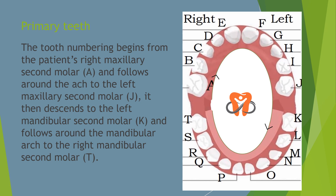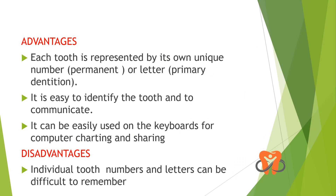For the primary teeth, numbering begins from the patient's right maxillary second molar, which is letter A. It proceeds to E — the right maxillary central incisor — then continues to the left maxillary second molar, which is J. Then we move downwards to the left mandibular second molar, which is K, and proceed to the right mandibular second molar, which is alphabet T. Each tooth has its own unique letter — D is the right maxillary lateral incisor and G is the left maxillary lateral incisor.